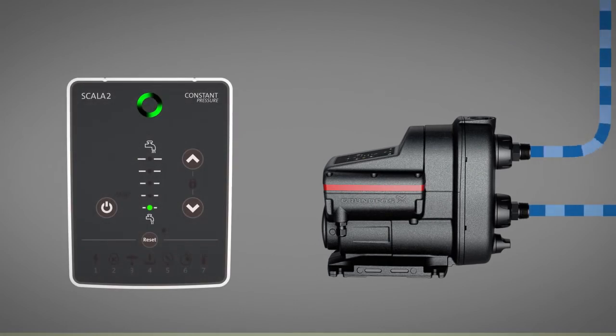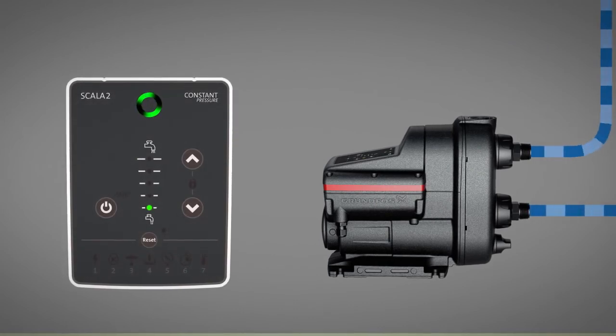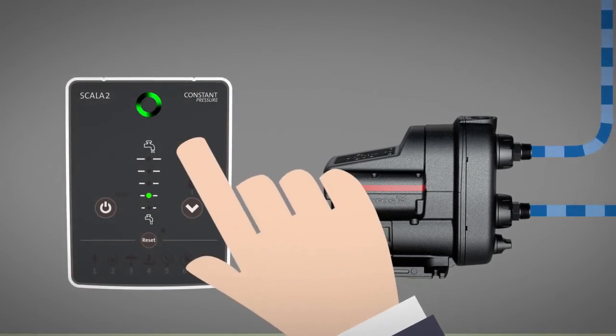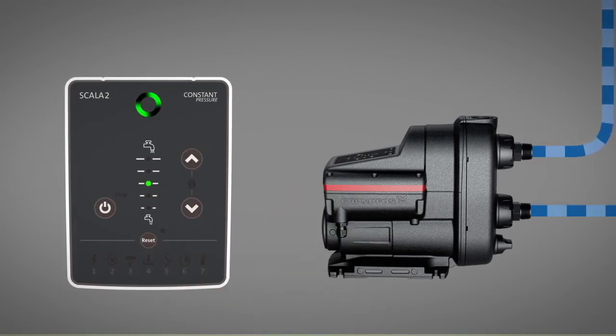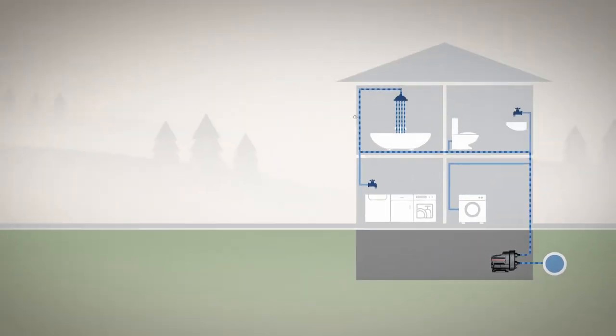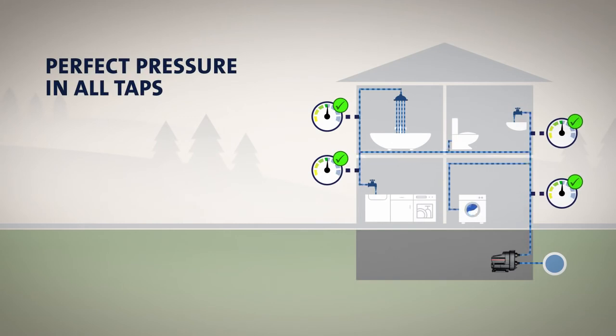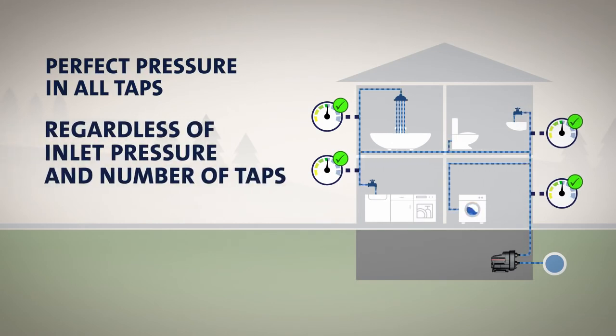For installers, this means that the setup process is quick and easy. Simply set the desired pressure level using the control panel and check the water pressure at the furthest tapping point, preferably a shower, as this is where insufficient pressure will be felt most directly by the homeowner. If the water pressure is perfect here, this will be the case at all tapping points, no matter if the inlet pressure varies or several taps are running at the same time.